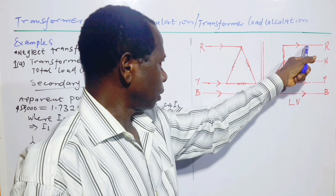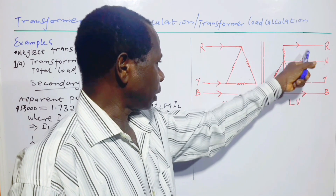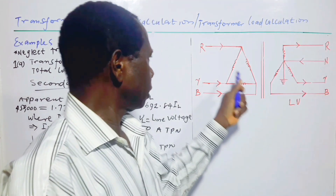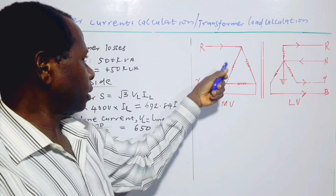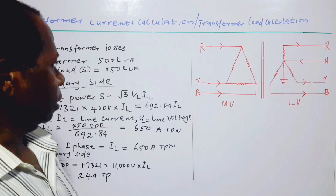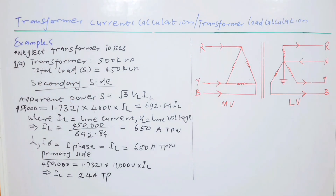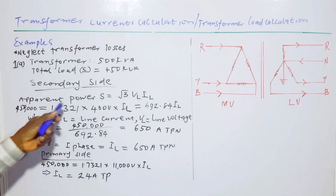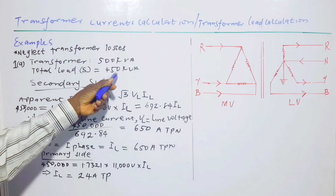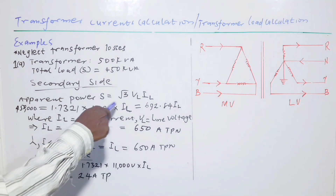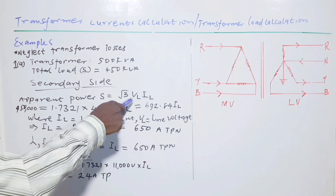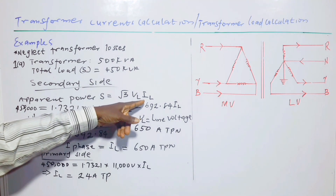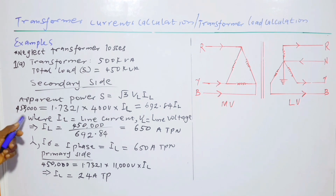We start with the secondary side. For the star-connected secondary, the phase voltage is measured from line to neutral, and the line current is always equal to the phase current. The apparent power S of 450 kVA is given by: S = √3 × V_line × I_line.